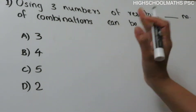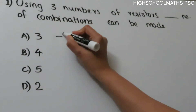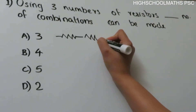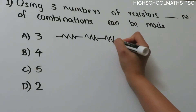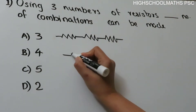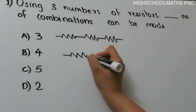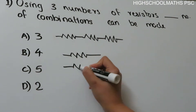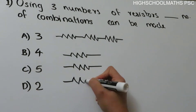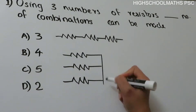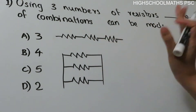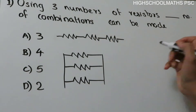Now, two combinations are easy. We have three resistors. We connect these three resistors — this is one combination, all in series. We are also able to connect all in parallel, because we have three resistors in parallel. We take these combinations. When we consider these three resistors, we have two straightforward combinations.